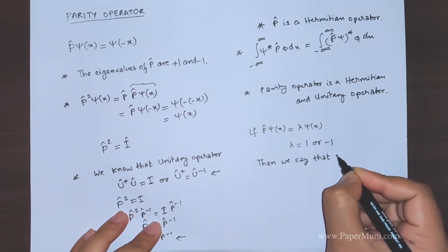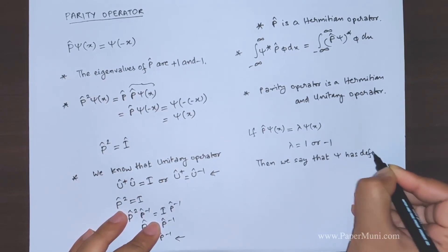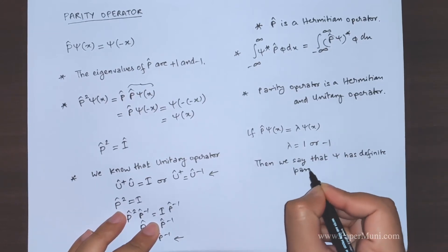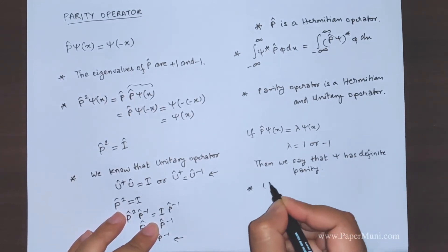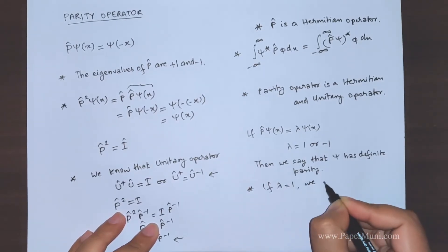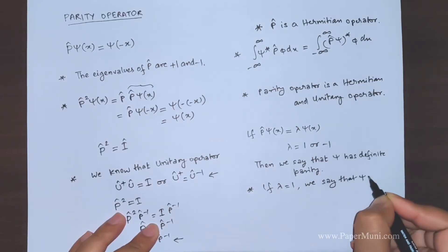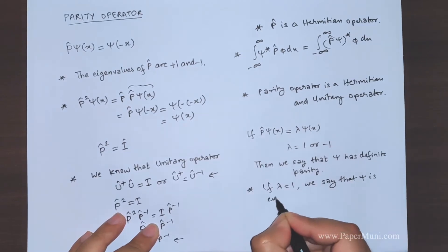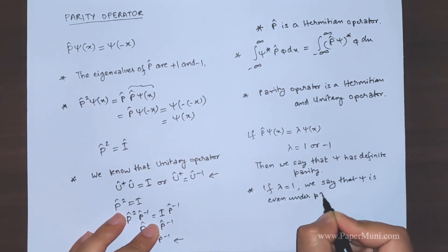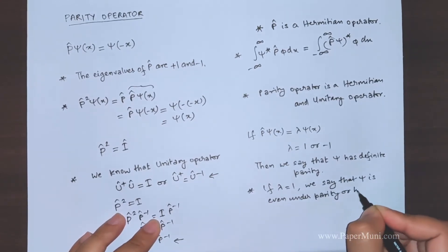If λ is equal to plus one, we say that ψ is even under parity, or has even parity.